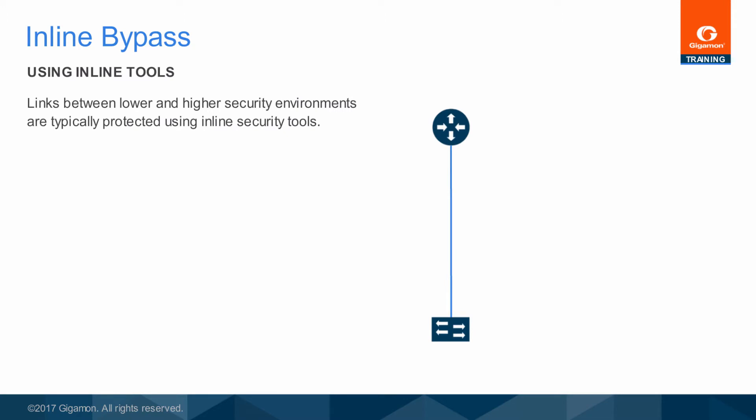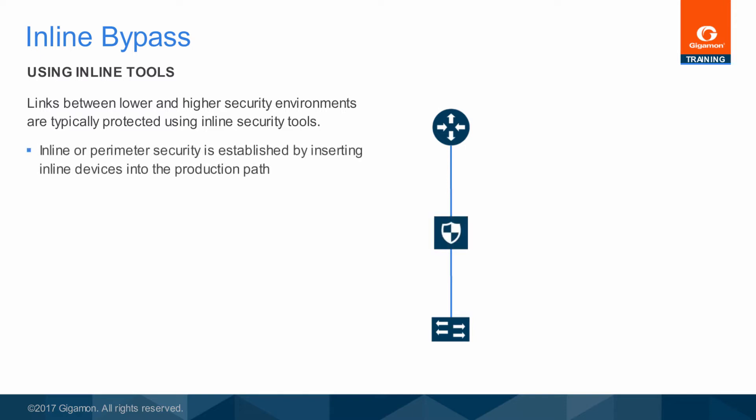A typical organization implements perimeter security on any internet-facing link, and sometimes on internal links between lower and higher security environments. This perimeter security is manifested as an inline device, ranging from a firewall to an IPS, DLP, or malware box, and sometimes several types in series. All traffic must be evaluated by the inline device before an allow-deny decision is made.